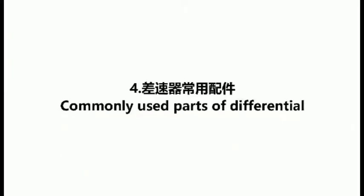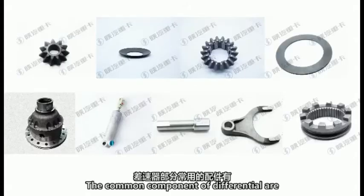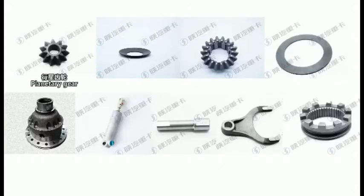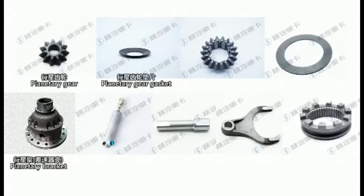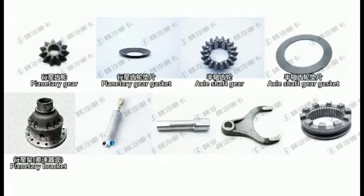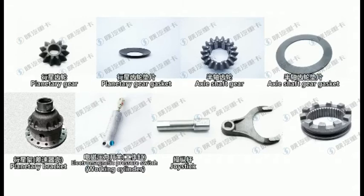The commonly used parts of the differential include: planetary gear, planetary gear gasket, planetary carrier, axle shaft gear, axle shaft gear gasket, electromagnetic pressure switch, joint stick, fork, and sliding sleeve, and so on.